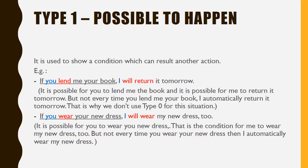Type 1: Possible to Happen. This type is used to show a condition which can result in another action. For example: 'If you lend me your book, I will return it tomorrow' — it is possible for you to lend me the book and possible for me to return it, but not every time automatically. Another example: 'If you wear your new dress, I will wear my new dress too' — that is the condition, but it is not automatic every time.